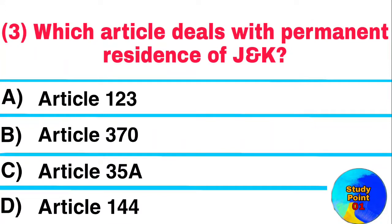Question: Which article deals with permanent residents of J&K? Answer: Article 35A.